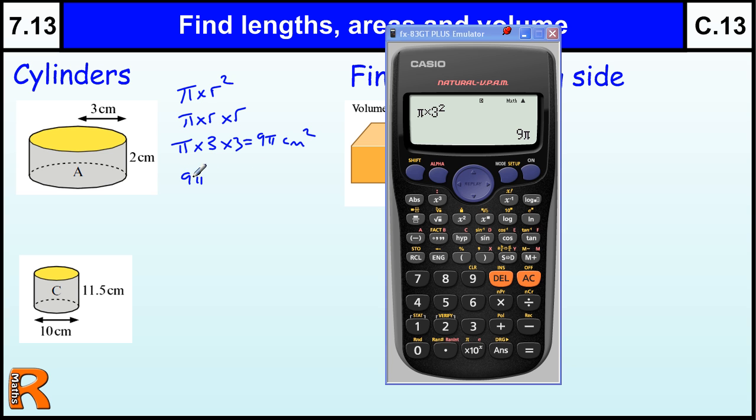So we've got 9 pi times by 2. So exactly, that would be 2 nines at 18 pi. And you can leave your answer as that. And that would be a volume. But if we wanted it as a decimal, to a certain number of decimal places, say one decimal place, that would be 56.5 centimeters cubed.